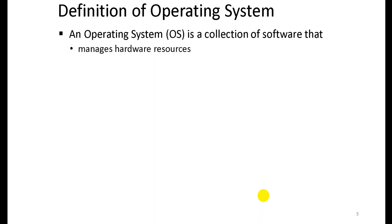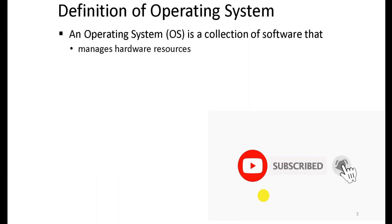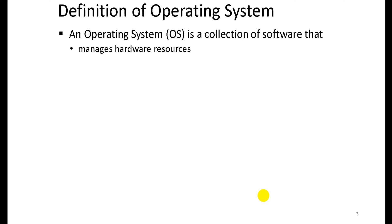There are two types of software: system software and application software. Application software includes programs like games, music players, and business applications. The operating system is one part of system software. So an operating system is a collection of software that manages hardware resources and also provides various services to the user.